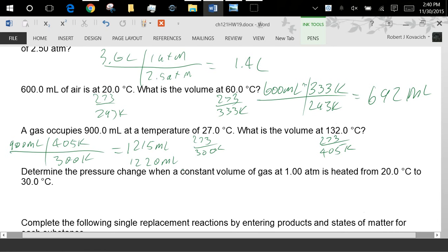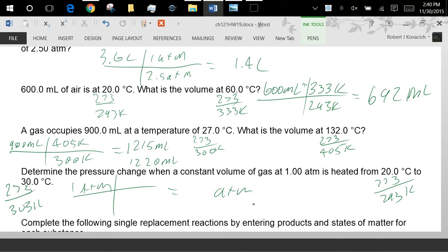Determine the pressure change when a constant volume of gas at one atmosphere is heated from 20 to 30. So I start at one atmosphere, I want to know my new atmospheric pressure and I'm heating this from 20 to 30. So what's going to happen to the pressure of a gas that gets heated up? It's going to increase. So I'll put my 303 number here and my 293 number here. And I get 1.03 atmospheres. So it didn't go up a lot but it went up.